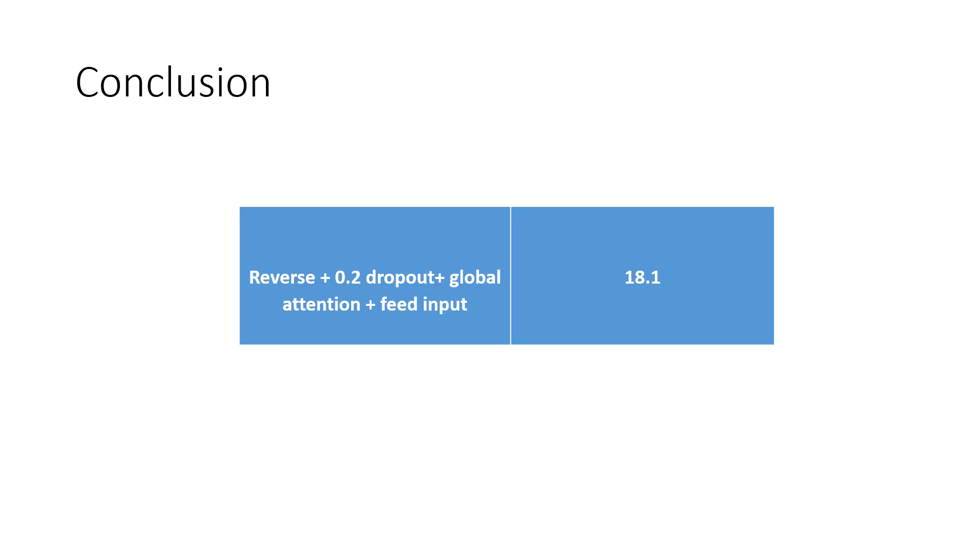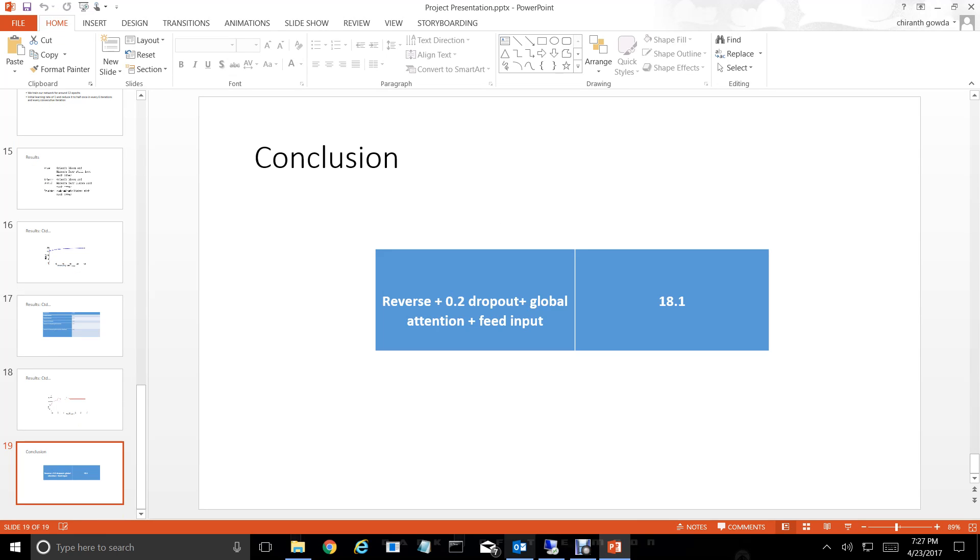This is the best result that we got when we reversed the source sentence with a dropout probability of 0.2 and along with global attention and feed input. Let's quickly go for the demo.